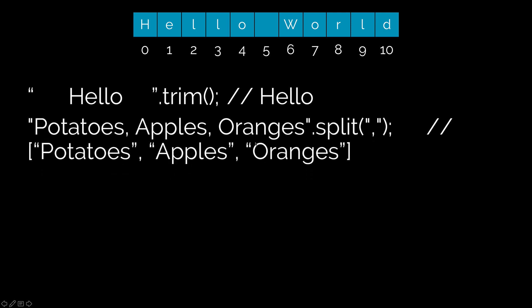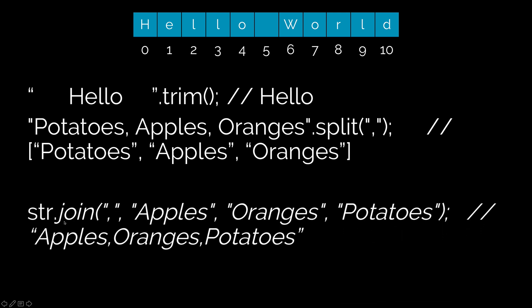Now there's the other method which is split that is going to take your string and it is going to split it into an array, and we'll talk about what an array is as we go further. For now all you need to know is it gives you the values separately. Now there's another method called join that lets you take different strings like apples, oranges, potatoes and merge them together such that they are separated by a comma in between.